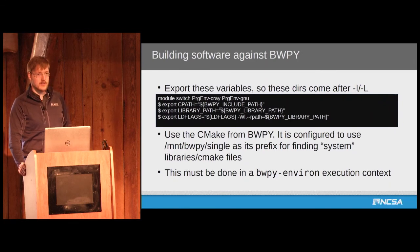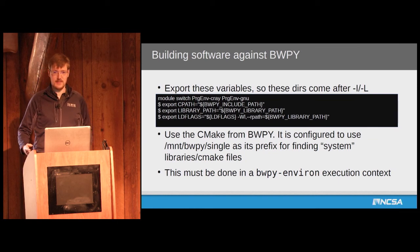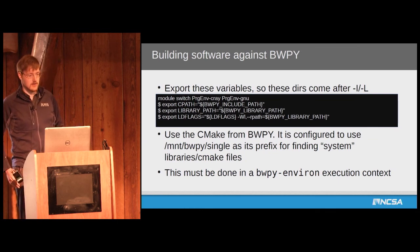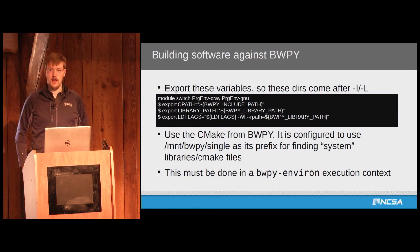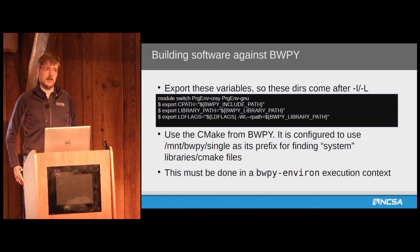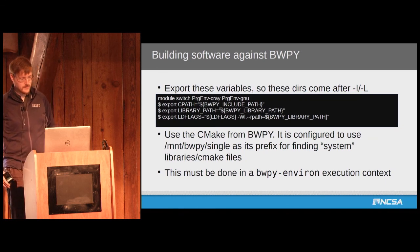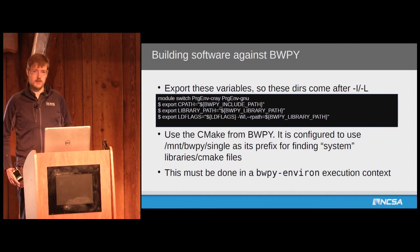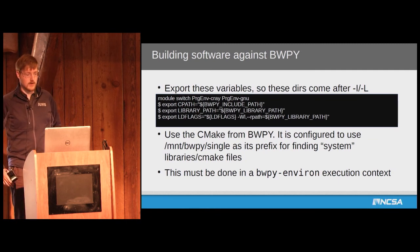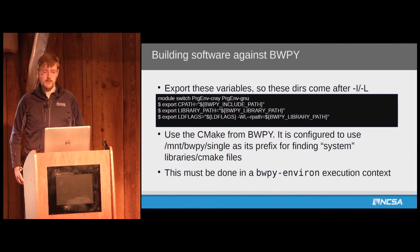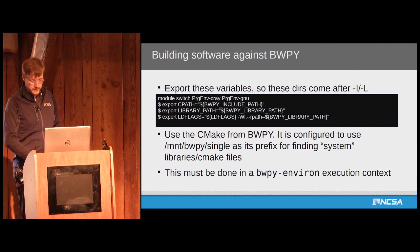If you are going to build software against BWPy, there's documentation on the website, but you need to export certain environment variables so that things treated as system libraries come last in the include paths. Otherwise you can get compilation errors with -I and -L flags because of ordering issues. You also want to use the CMake that is included in BWPy because it is configured to treat those directories as system library directories and knows where to look for its CMake files. When compiling things against BWPy, you should do it within a BWPyEnviron execution context.